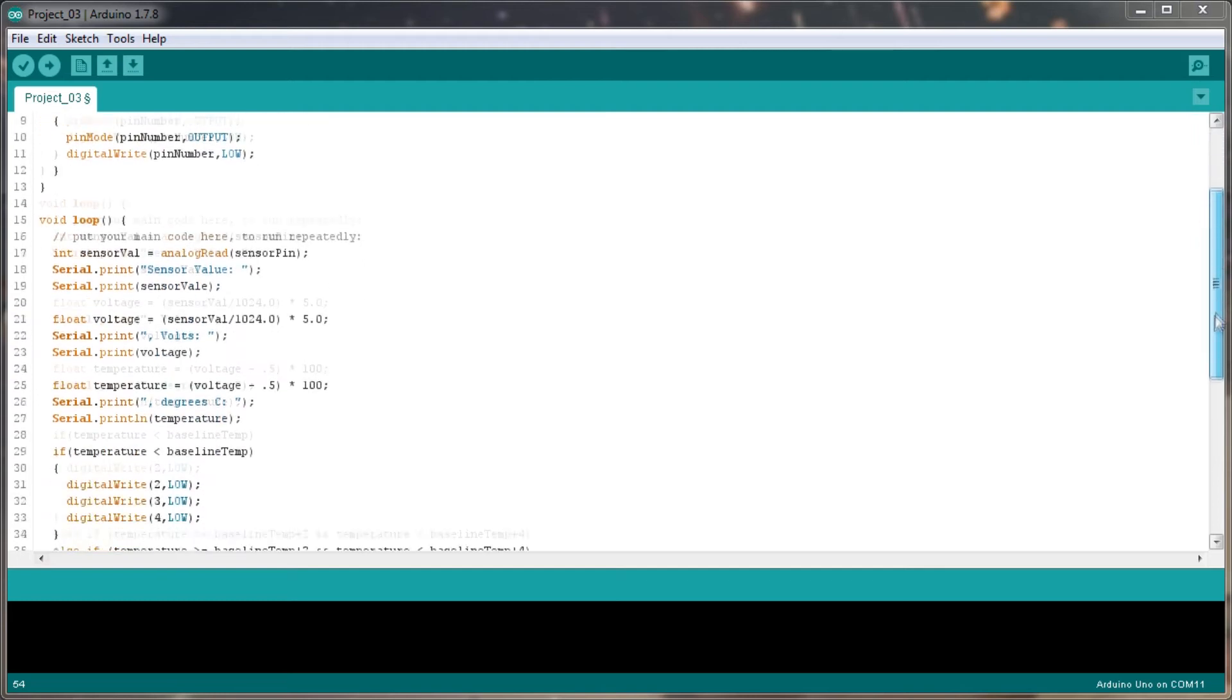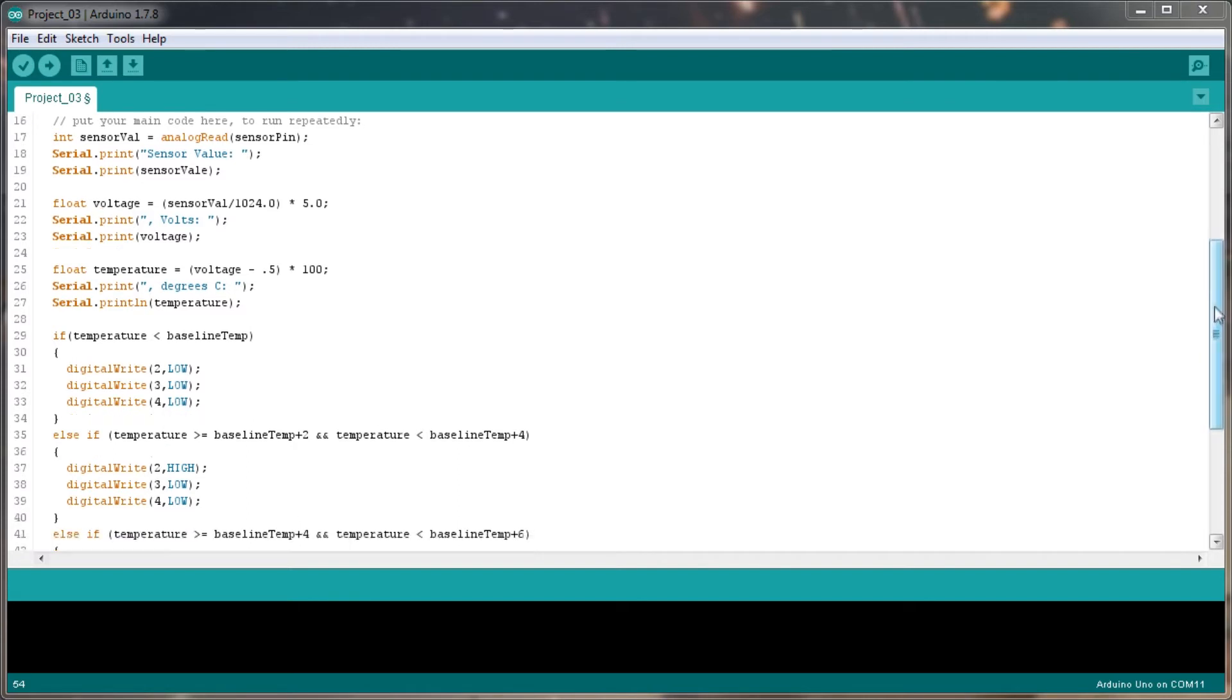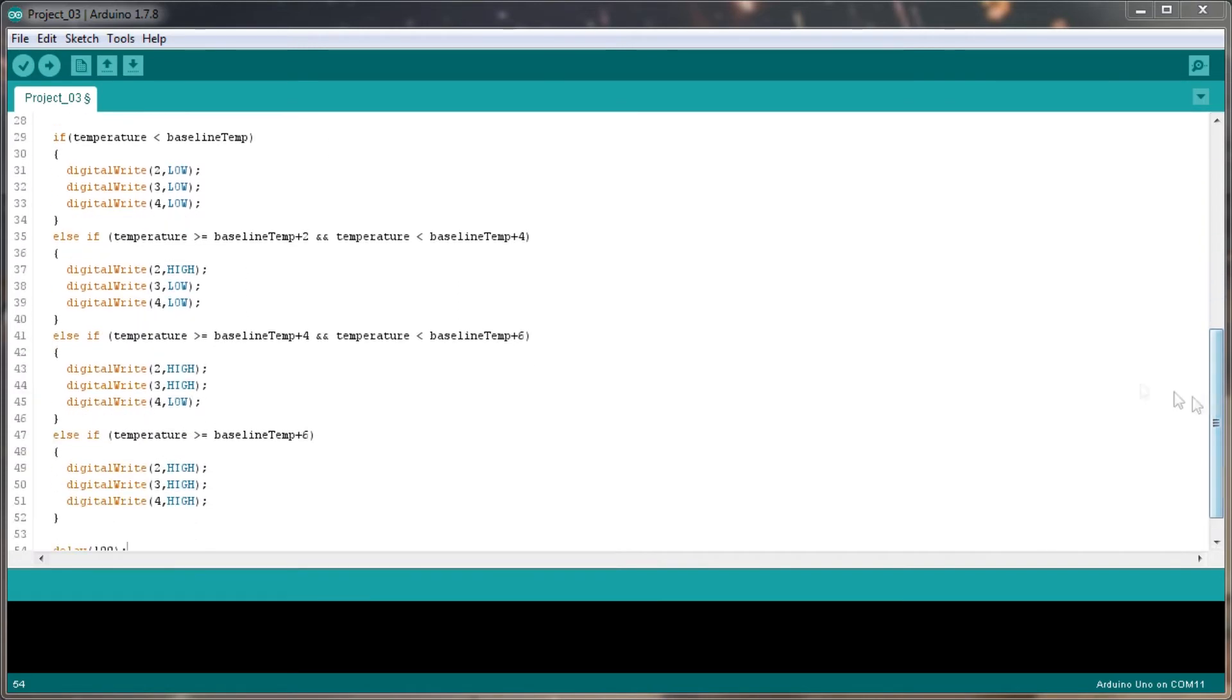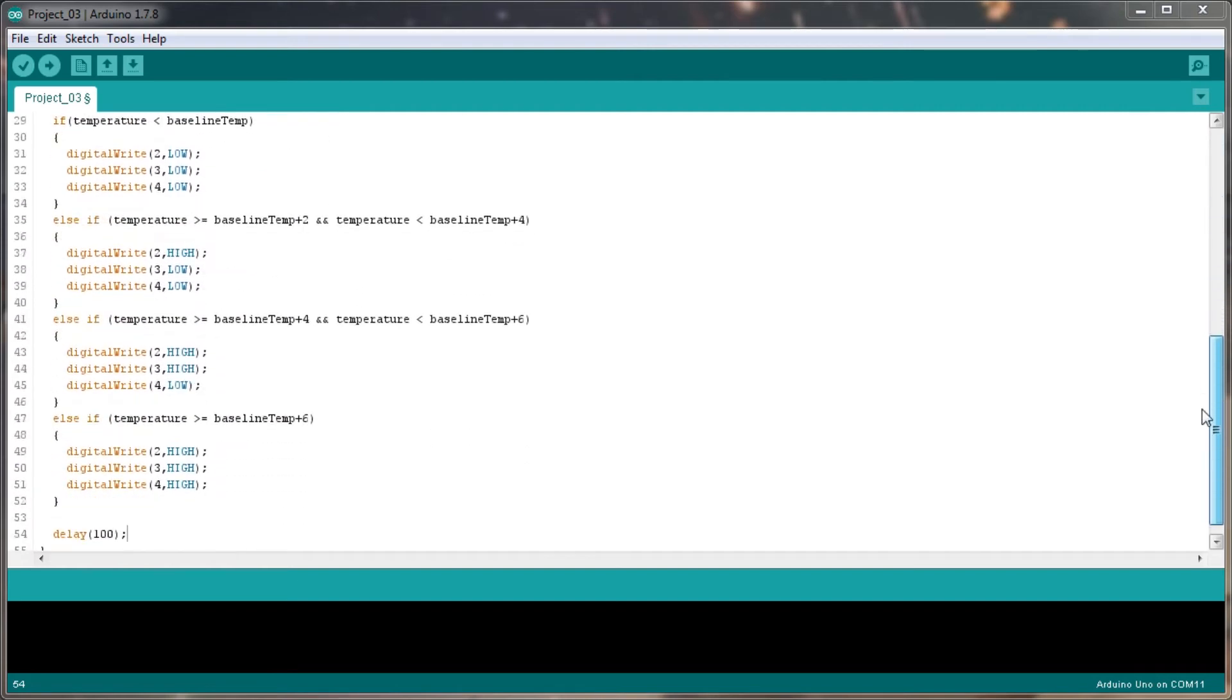Then in our loop, the first thing we're doing is having a look at the sensor value, and then whatever that sensor value is, we're going to be reading out the voltage and then the degrees centigrade from it. Then we're going to compare the temperature against our baseline temperature, which began with 10. If the temperature is less than the baseline temperature, then we're going to leave all of the LEDs off, so 2, 3 and 4 are going to be set to low.